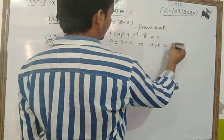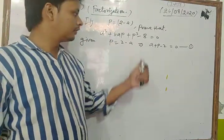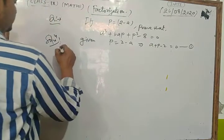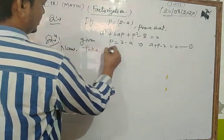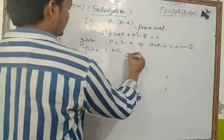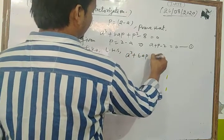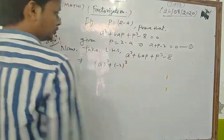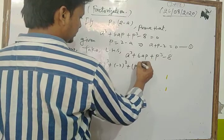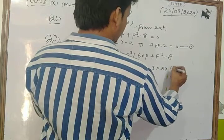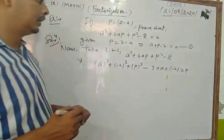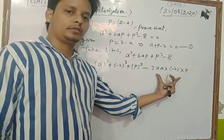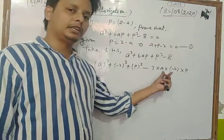Taking the LHS: a³ + 6ap + p³ - 8. We rewrite this as a³ + p³ + (-2)³ - 3(a)(p)(-2), since 3 × a × (-2) × p gives -6ap, but with the negative sign we arrange it to match the identity a³ + b³ + c³ - 3abc, where b = -2 and the 6ap term is accounted for.